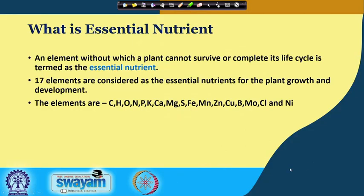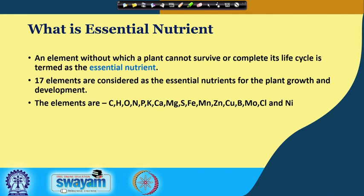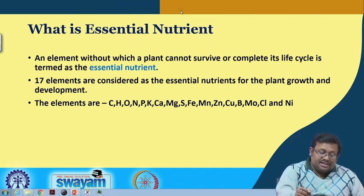What is an essential element or essential nutrient? We will use these terms interchangeably. An element without which a plant cannot survive or complete its life cycle is termed an essential element or essential nutrient. There are 17 elements which are considered as the essential nutrients for plant growth and development.